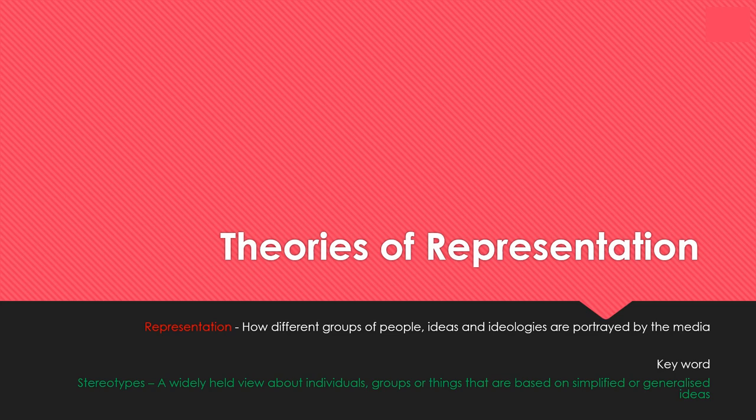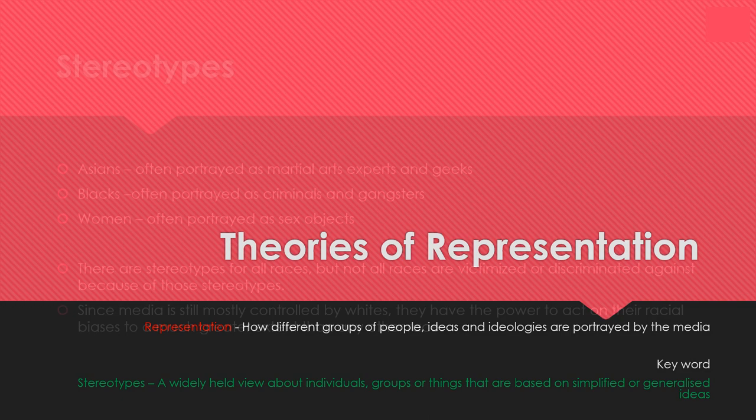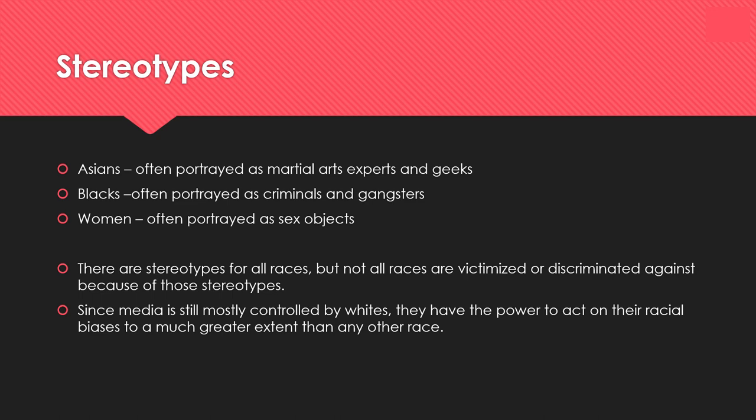Now we'll move on to the theories of representation. Representation is how different groups of people are portrayed in the media. We're going to look at stereotypes — a stereotype is a widely held view about a group of people. Examples include Asians often portrayed as martial arts experts and geeks, Black people often portrayed as criminals and gangsters, and women often portrayed as sex objects. Stereotypes affect different races, though not all races are equally victimized, partly because a lot of media is still controlled by white people — though more diverse directors are beginning to change this.